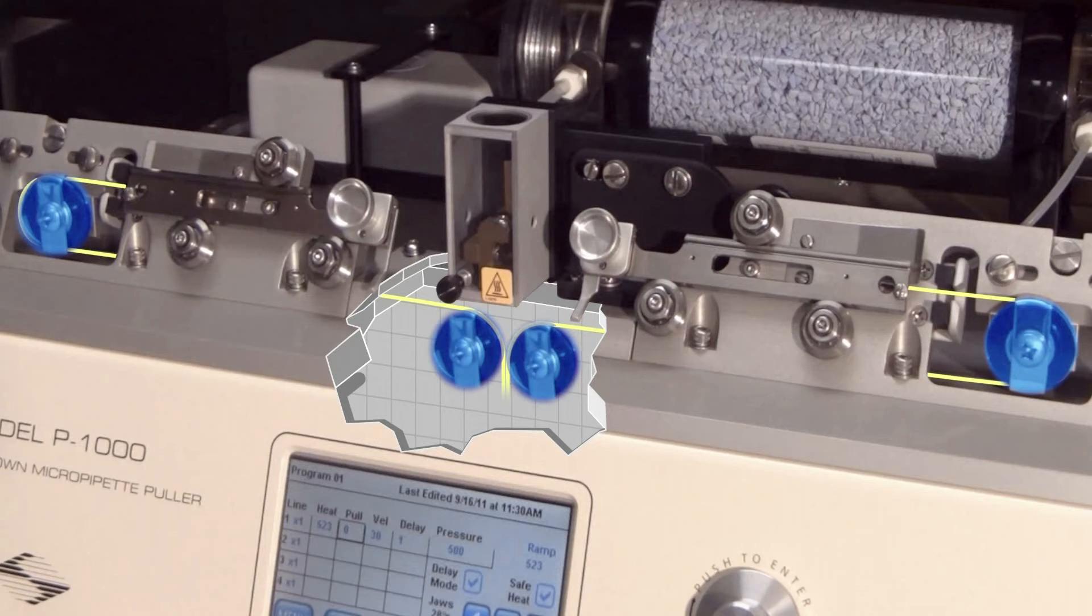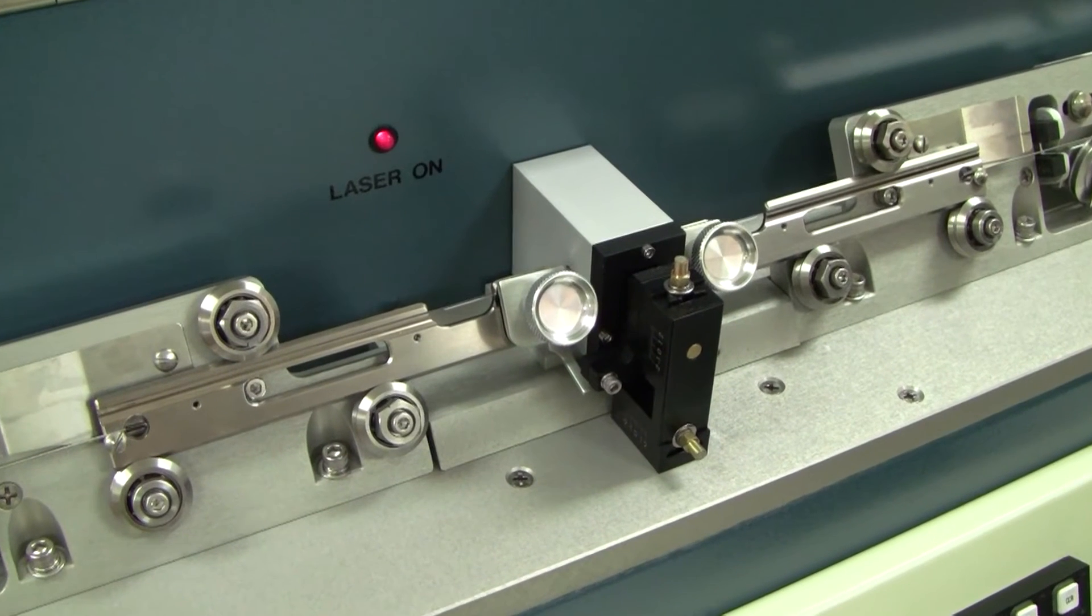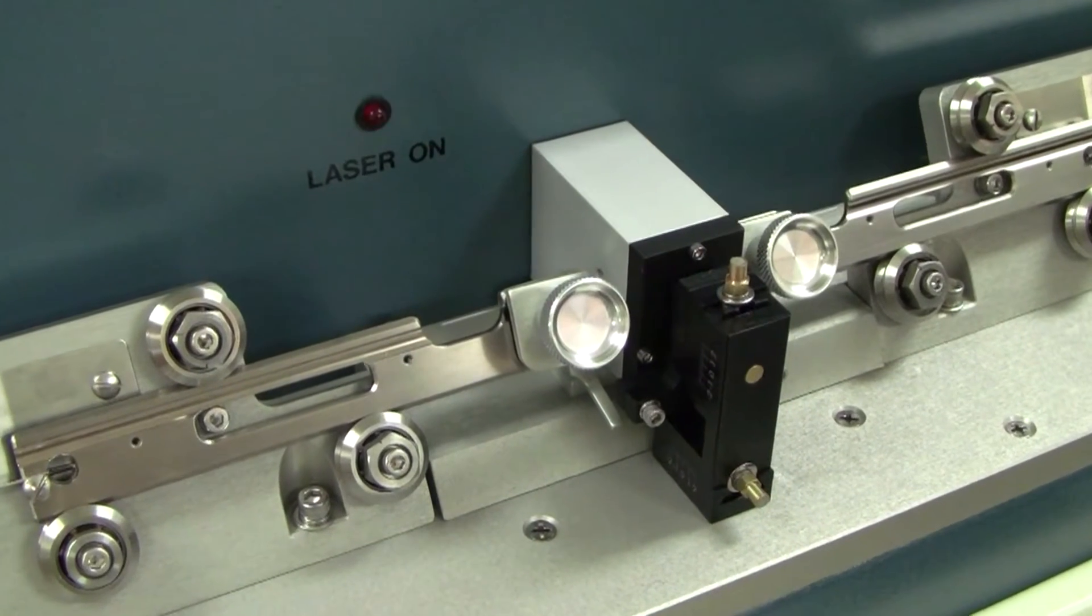The pulleys guide the pull cable and route it to the lower pulley assembly. Their smooth operation is crucial for the uniform movement of the puller bars and reproducible pull results.